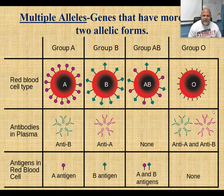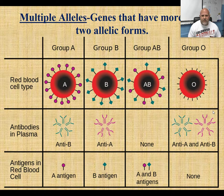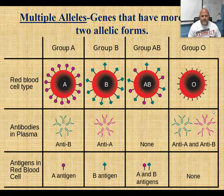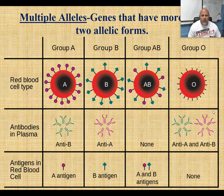Welcome to General Biology. Today's presentation is going to be on non-Mendelian inheritance, and we're going to focus on multiple allele traits. One common multiple allele trait is something that all humans have, and that's the ABO blood system.